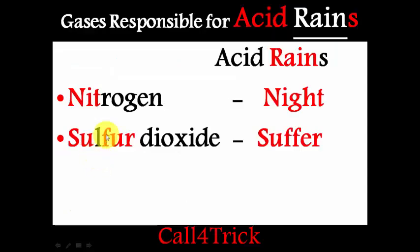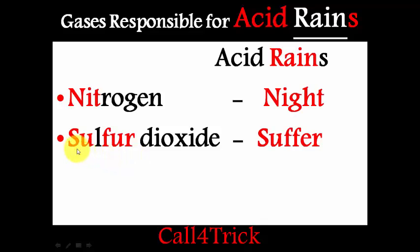The gases responsible for acid rain are nitrogen dioxide and sulfur dioxide. For nitrogen, the first three letters N-I-T have a pronunciation similar to 'night,' so try to remember nitrogen as 'night.' For sulfur dioxide, the letters S-U-F-U-R sound similar to 'suffer,' so try to remember sulfur dioxide as 'suffer.' So we now have: rain, night, suffer.